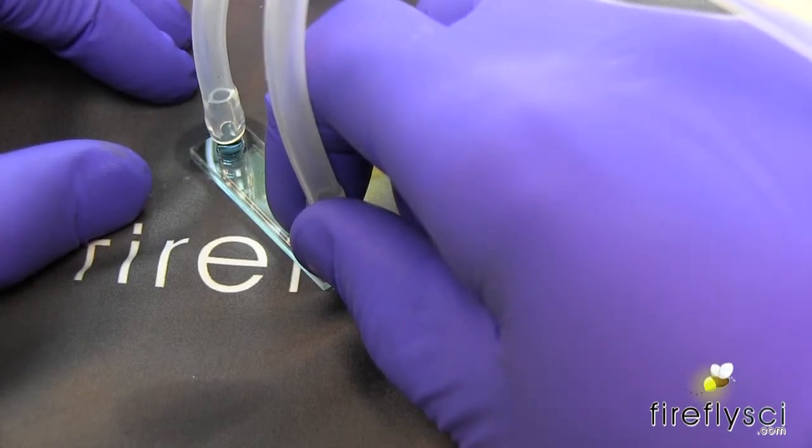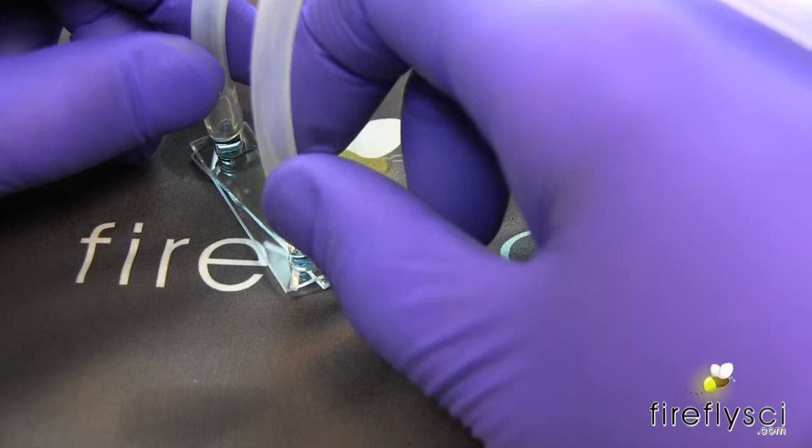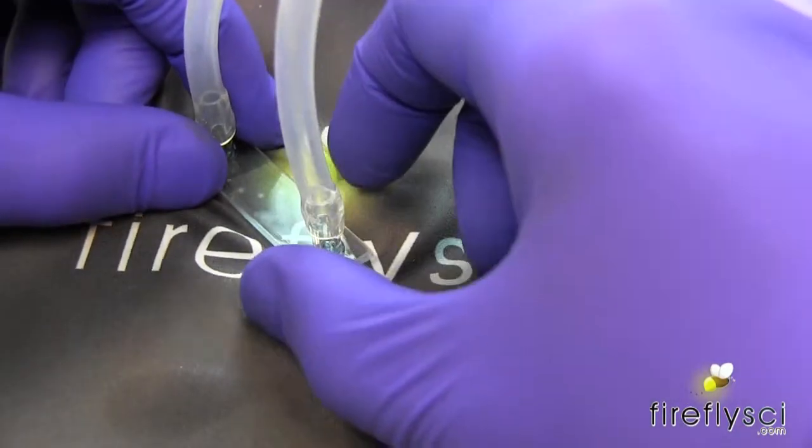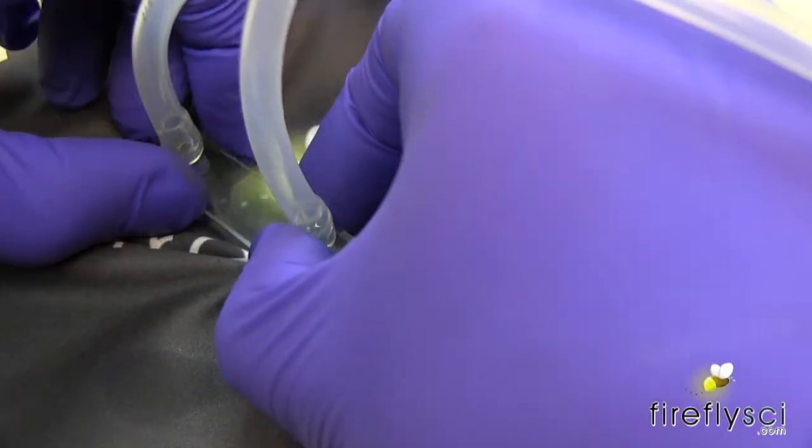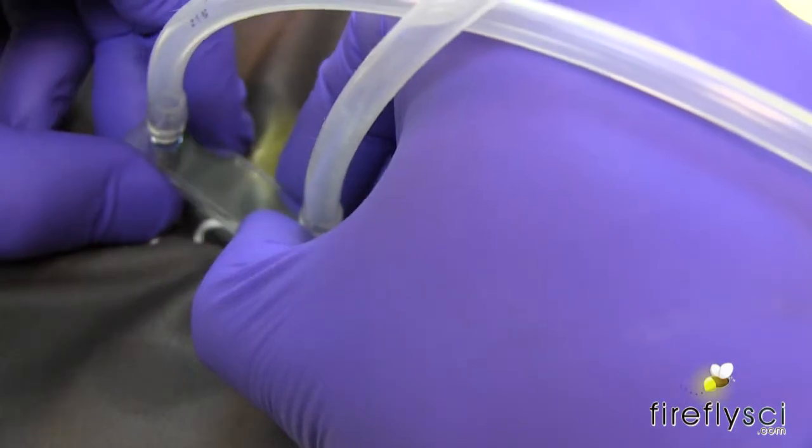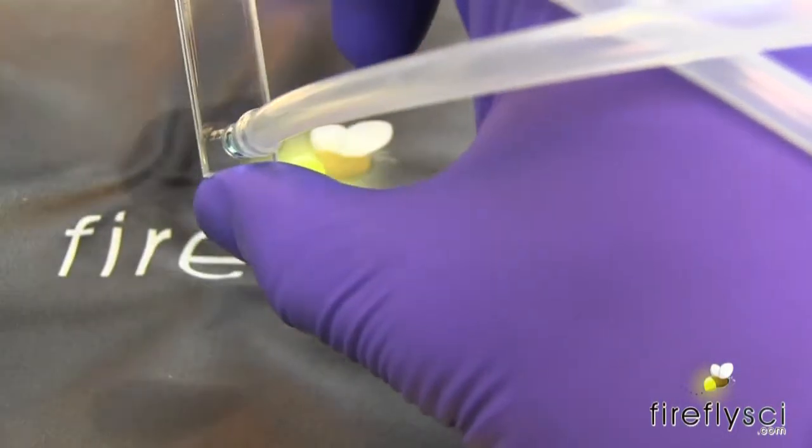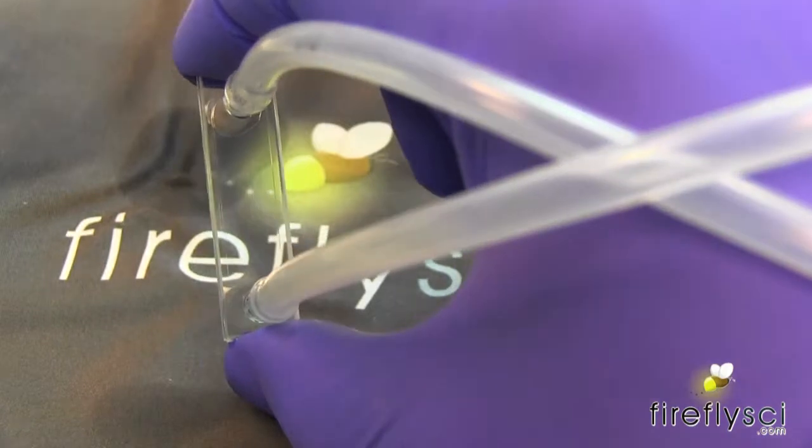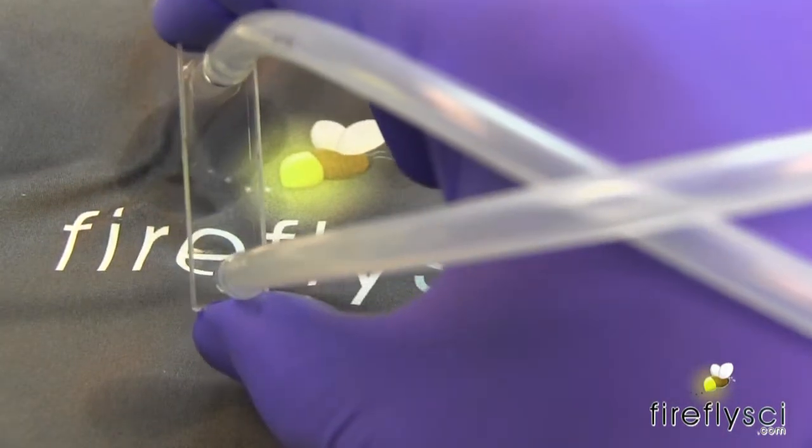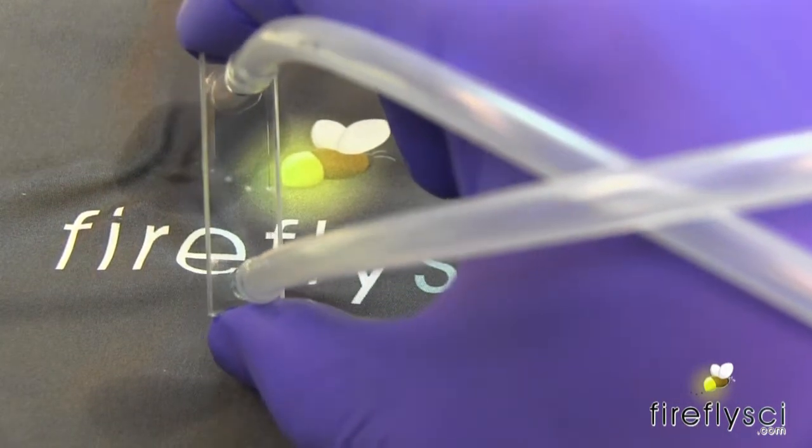It's okay if some of the sample gets out, but you really want to make sure that there's no air in there. That's most important. There we go. That's perfect. Now we're just going to put this in our cell mount and flow some sample through it.